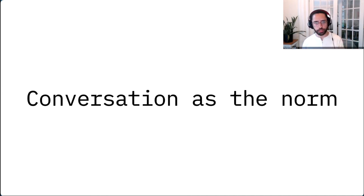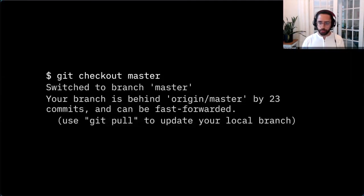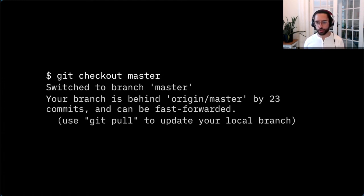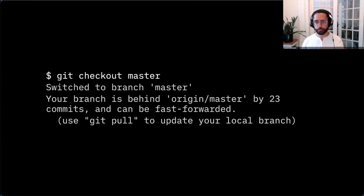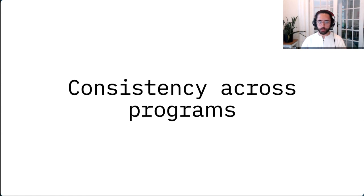Git has great examples of this. When you check out a branch, it doesn't just switch you to that branch — it also tells you the current status of the branch and how you can update it, like 'you're behind, you might want to git pull.' It's a very small thing, but little touches like this make the interaction flow more smoothly.